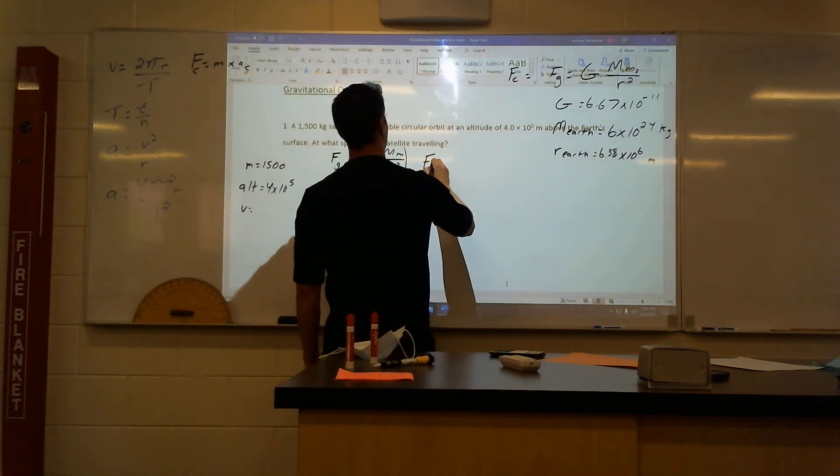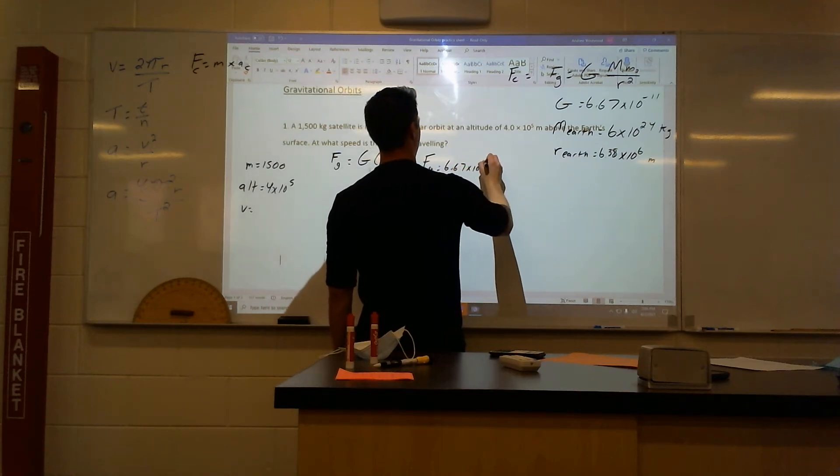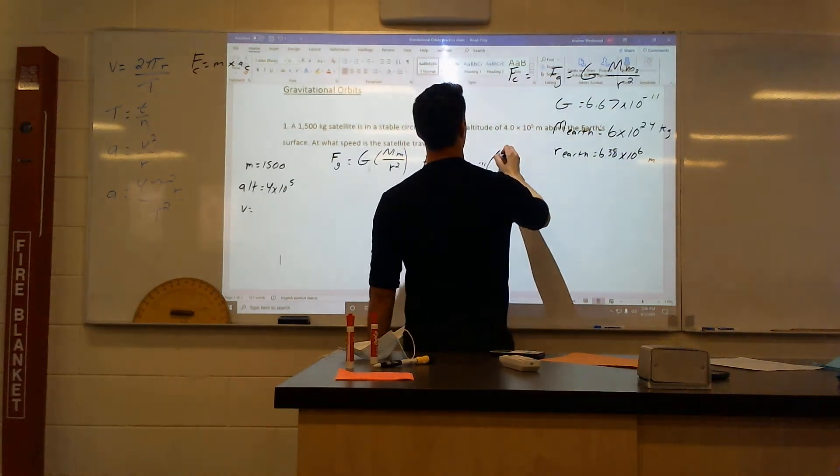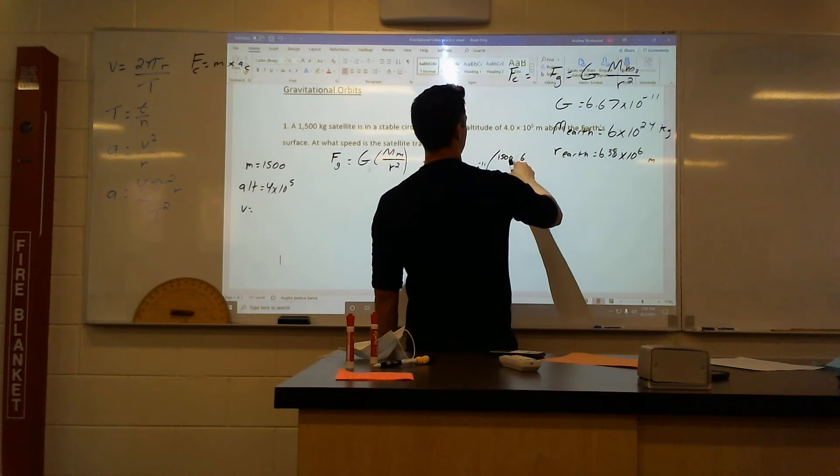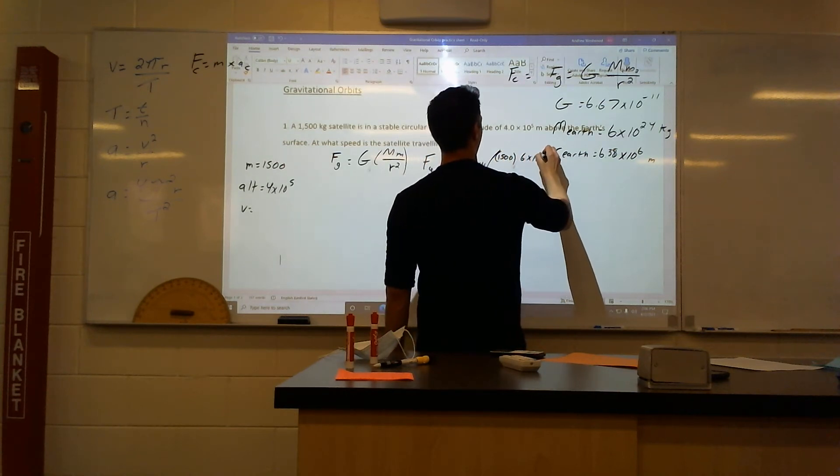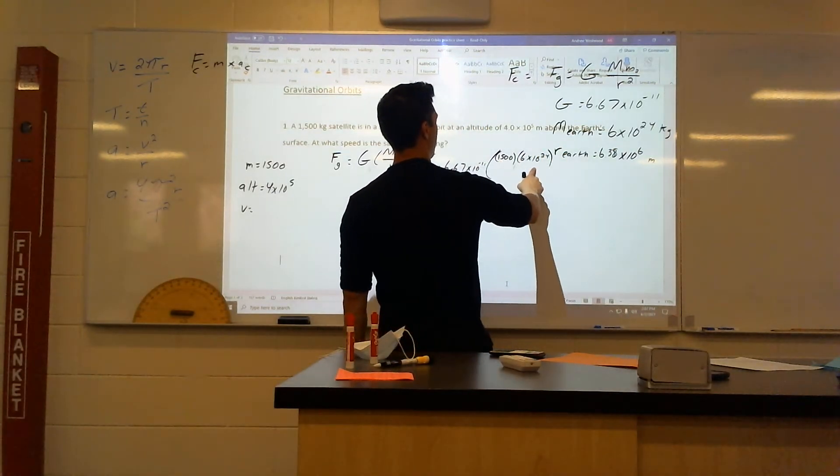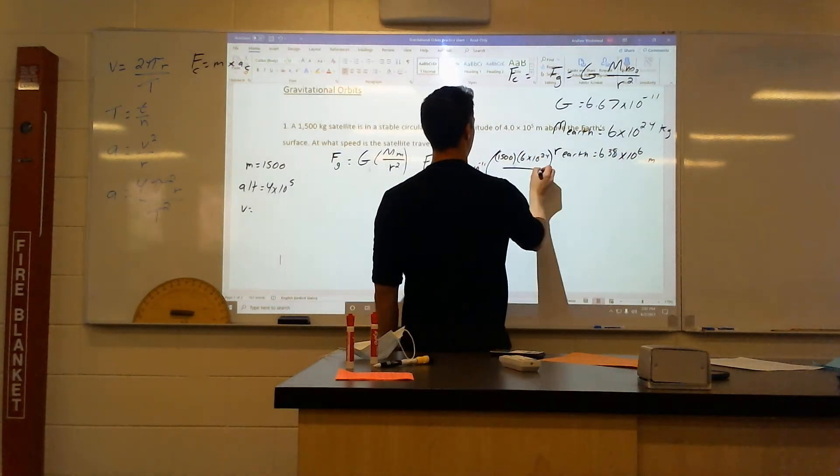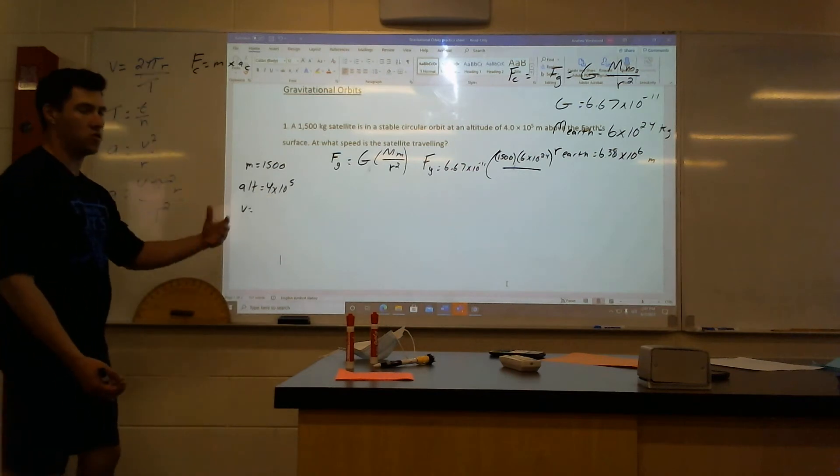Big G M over radius squared. Let's go through this. So force of gravity equals 6.67 times 10 to the negative 11. And then in brackets, I have my mass of 1,500. 1,500 times 6 times 10 to the 24. That is the mass of Earth. So 1,500 times 6 times 10 to the 24. And then the bottom. We need a radius. I said that this is an altitude, not a radius. Let's try and make sense of that.